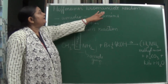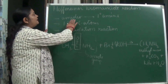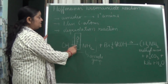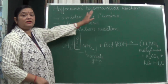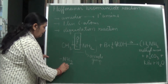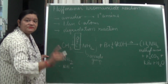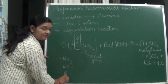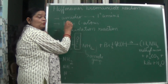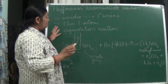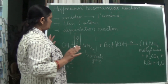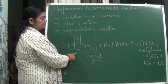Now let us study the Hofmann bromamide reaction. Here, amides are converted into primary (1°) amines. An amide contains –C(=O)NH₂. The product, a primary amine, is –NH₂. In this reaction, the product has one fewer carbon atom than the starting amide, and a degradation occurs — something is broken down and removed.